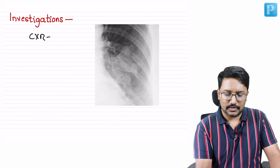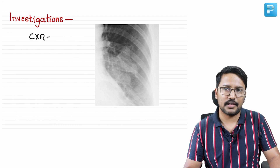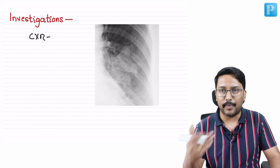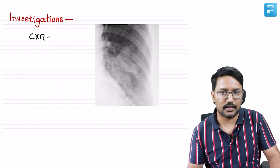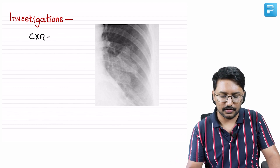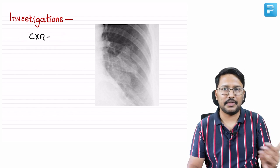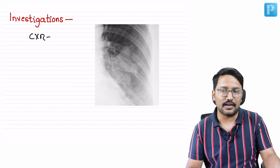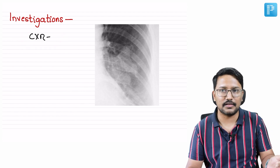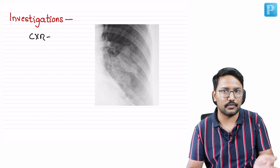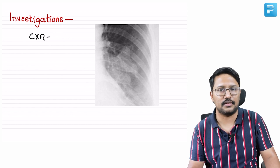When suspecting ABPA, imaging is very important — it is even part of the ISHAM criteria for diagnosis. You might do a chest X-ray. Even when an asthma patient is not responding to medications, an intercurrent infection is also considered an important differential, so imaging would have been done.